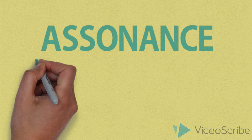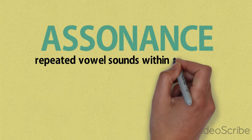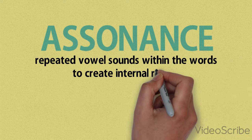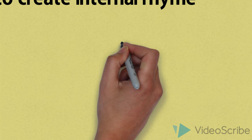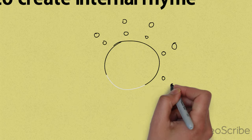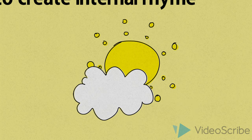Assonance is a vowel sound that creates internal rhyming within the phrases. So there's two examples here. On a proud round cloud and in a white high night.